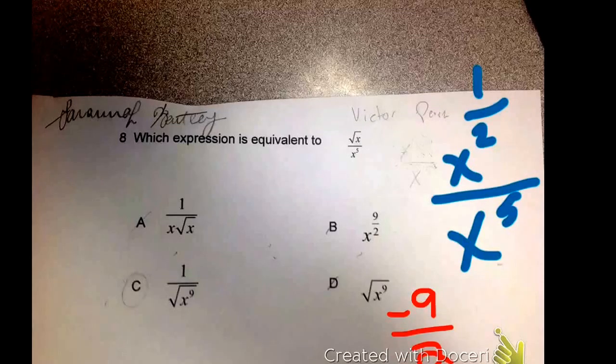Okay, the negative nine over two, that would become the denominator and we already know that A would not be the right answer or B because that's positive nine over two. So the right answer would be C.